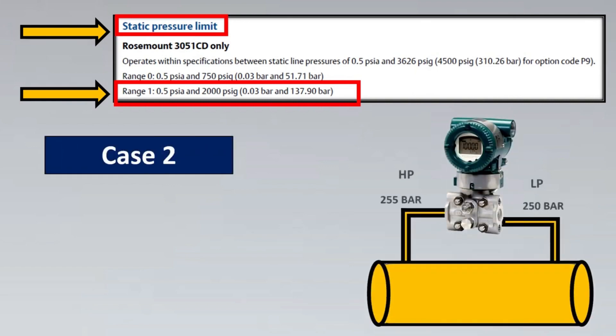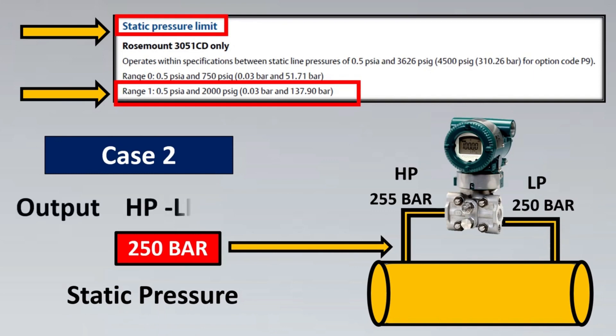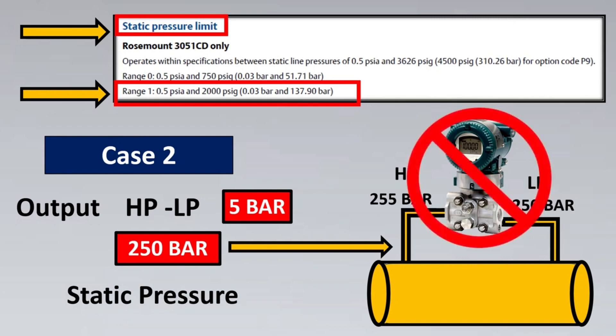The static pressure limit states that for Range 1, the maximum static pressure it can experience is 137 bar. But in our second example, the pressure hitting commonly on both legs was 250 bar. The static pressure was too huge, and if you had used the 3051CD for that case — even though the differential output of 5 bar fits your DP range — the transmitter would not be able to sustain this.